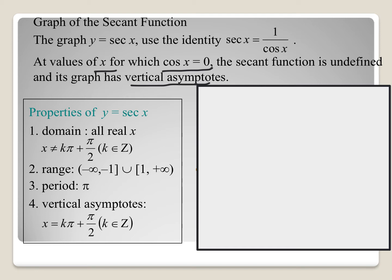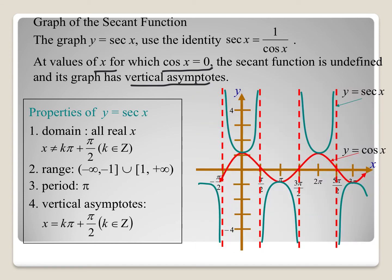Putting it all together, we have a similar process. The red function is the cosine graph, and we use that to help graph our secant. We place asymptotes at multiples of pi over 2 — at pi over 2, 3 pi over 2, 5 pi over 2, and so on. Then we sketch the secant coming up to the maximum or down to the minimum of the cosine function. Let's go ahead and try this.